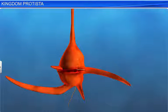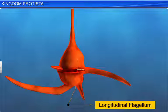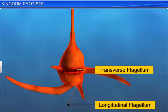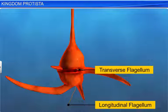Dinoflagellates usually have two flagella: longitudinal flagella and transverse flagella. Their names indicate how both the flagella are positioned.